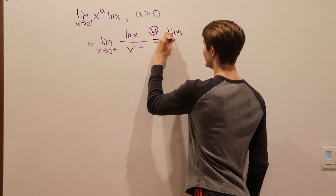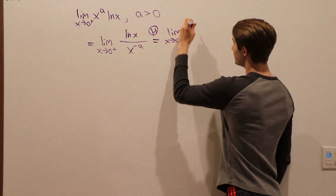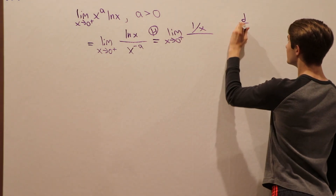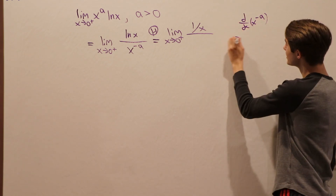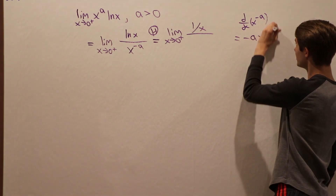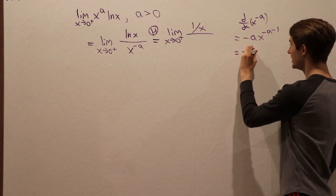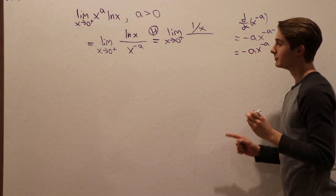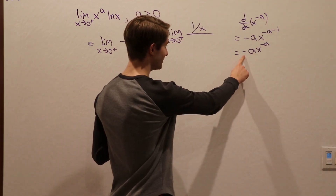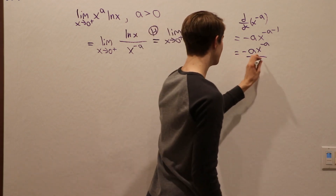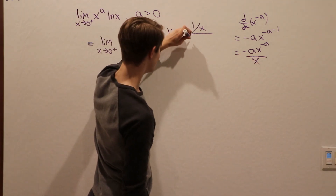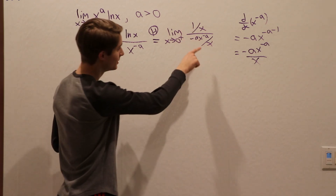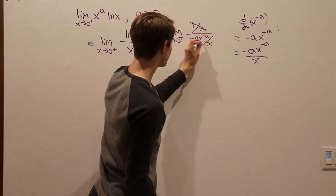This is going to equal the limit as x approaches 0 from the right of the derivative of natural log of x, which is 1 over x, divided by the derivative of x to the negative a, which gives us negative a times x to the negative a minus 1. We can write this as negative a times x to the negative a times x to the negative 1, and since x to the negative 1 is 1 over x, we get negative a times x to the negative a over x. We see that we have a 1 over x on the top and a 1 over x on the bottom, so we can cancel those out.